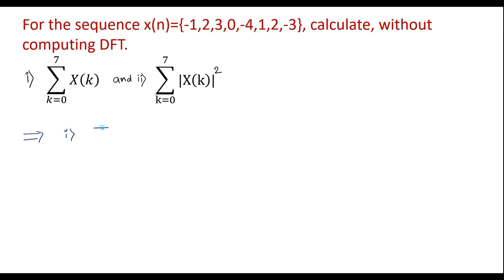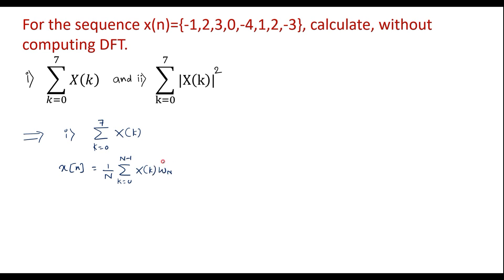Consider the first case, that is summation k equal to 0 to 7 of x of k. We know that the IDFT expression is given by x of n equal to 1 over N, summation k equal to 0 to N minus 1 of x of k, W_N power minus nk, or it can be represented as 1 over N summation k equal to 0 to N minus 1 of x of k, e power j 2 pi by N into n into k.